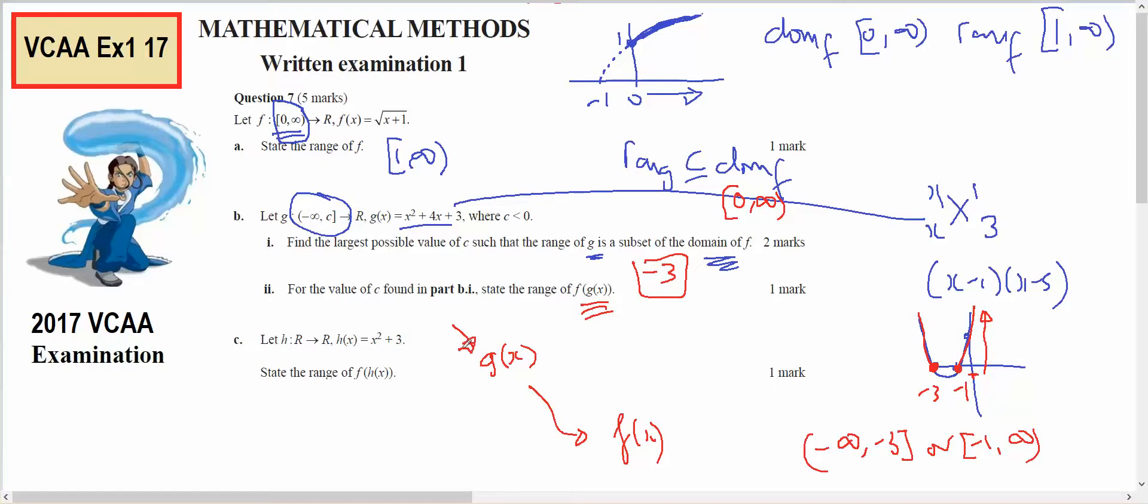The numbers that are going to go into g are going to be negative infinity up to negative 3. So these are the numbers that are going to go into g. What's going to come out is 0 to infinity. So what's going to go in here is 0 to infinity, which is the same as this domain here, so the range will still be 1 to infinity.